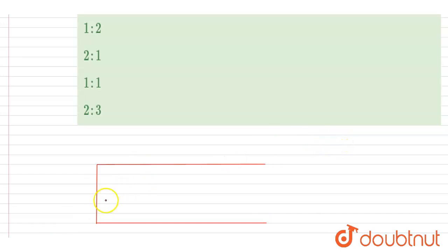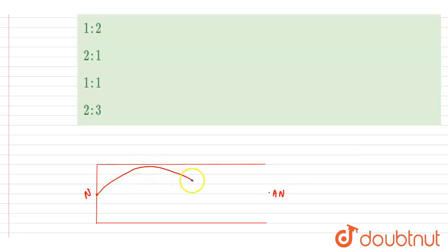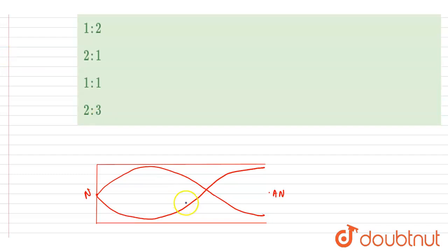This is vibrating in its first overtone. In a closed organ pipe, odd multiples of λ/4 form. So here the node will form, and here the antinode will form. In the first overtone, which is the second harmonic, one more node forms in between — like this. This will be the proper structure of the first overtone, and this is the length l.